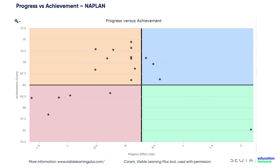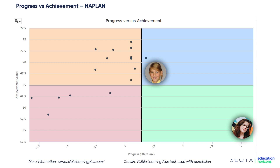If we apply this to individual students and look at NAPLAN data, here is Geordie — she's made really good progress and is high progress, high achievement, which is where you want all your students. This is Caitlin, who has made huge progress but is still significantly below the average for her year level. However, she has specific learning needs, so this really needs to be celebrated with her because she's made such significant progress.